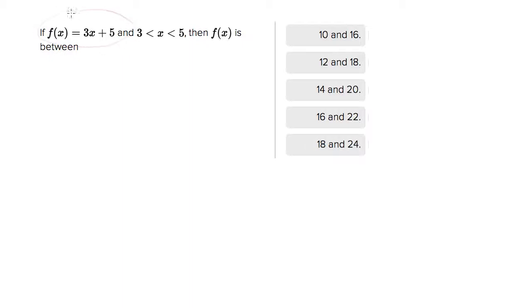So let me show you what I'm talking about. They give you a function based on x, and they tell you the domain of x is somewhere between 3 and 5. But what they want to know is what possible values of f(x) can result from that.